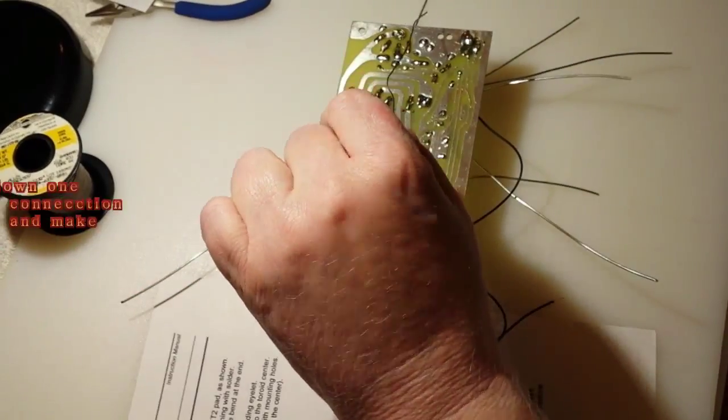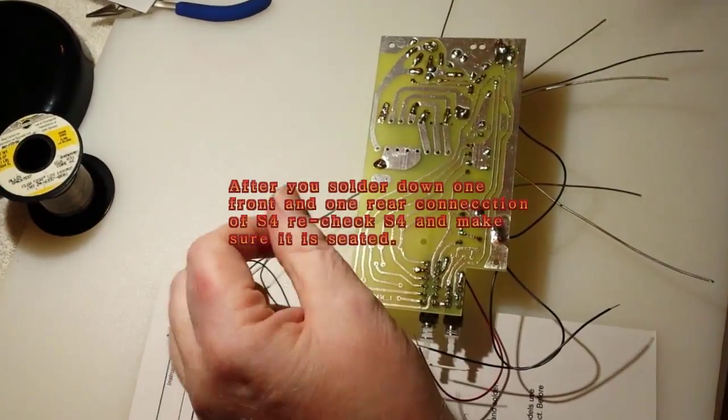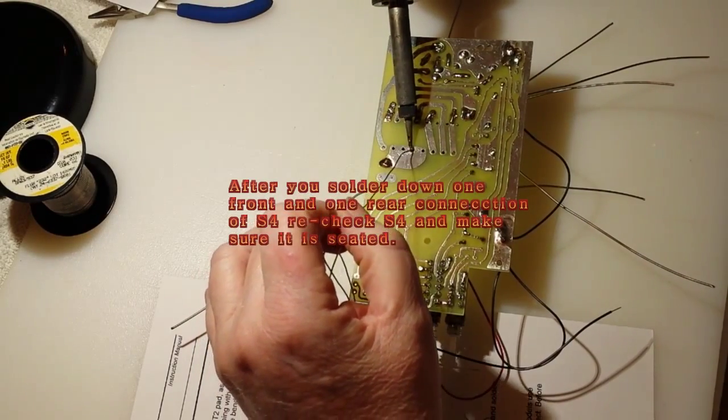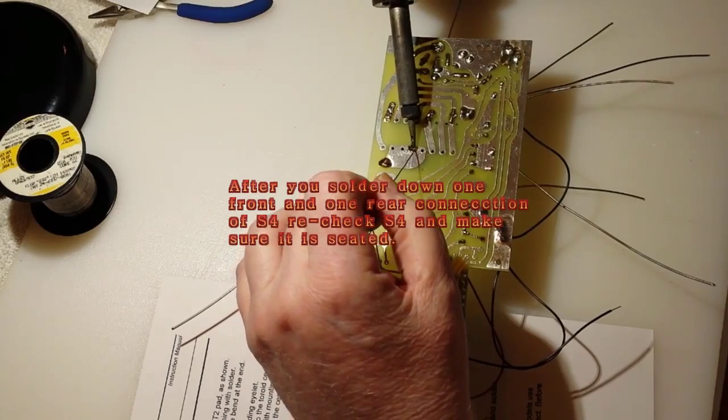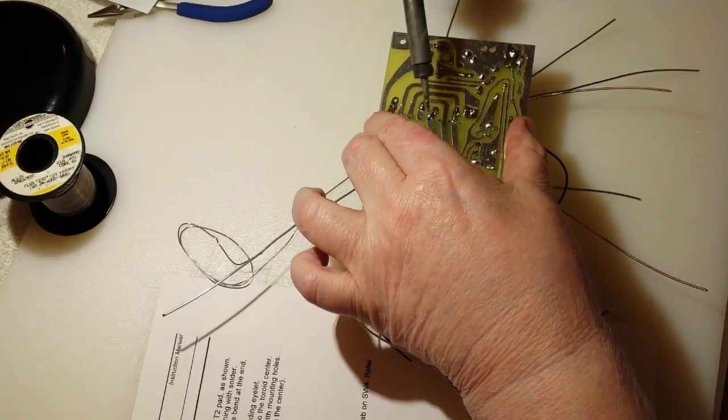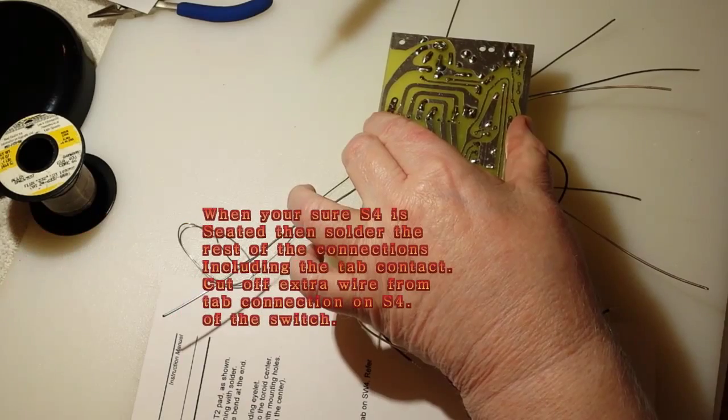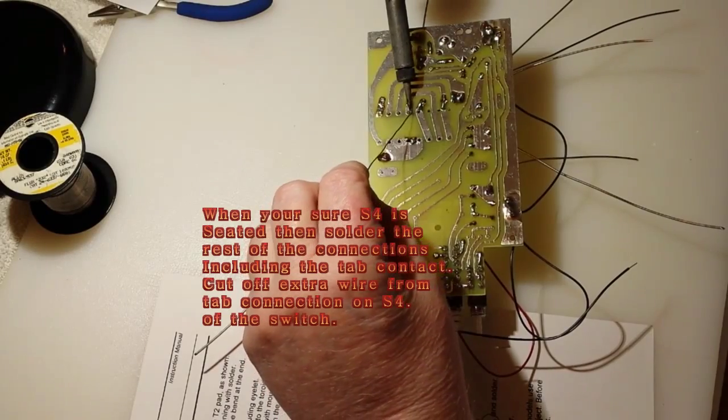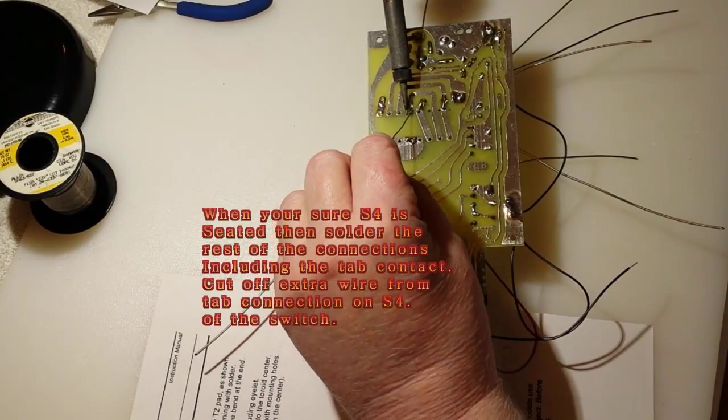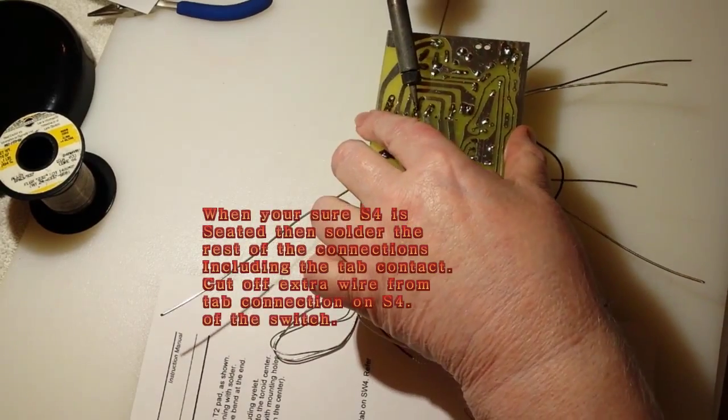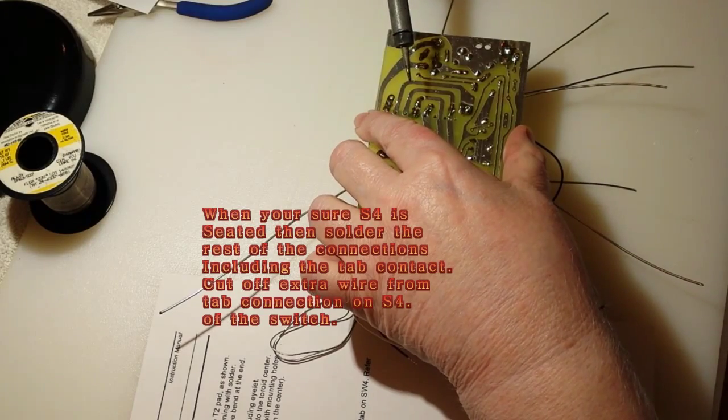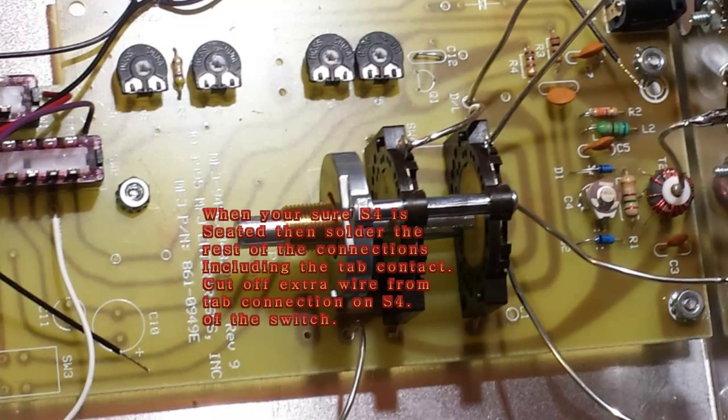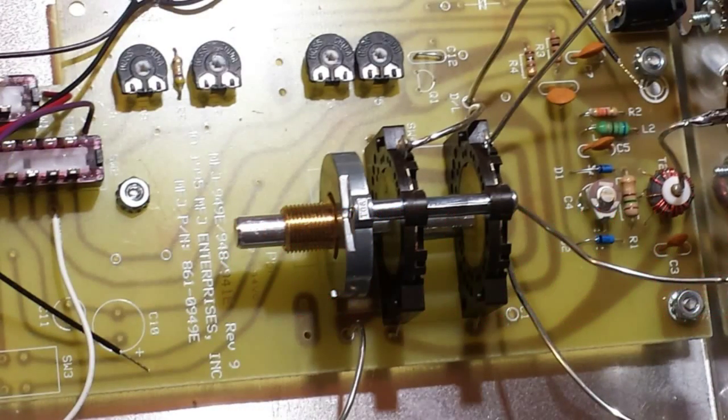When we heat the solder, keep the solder liquid, hold the board down with the solder still liquid and then move the soldering iron away letting the solder cool before we let go of the board.